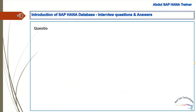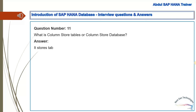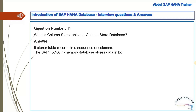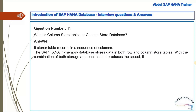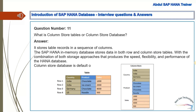Question 11: What are column store tables or a column store database? Answer: Column store tables store records in a sequence of columns. The SAP HANA in-memory database stores data in both row and column store tables. The combination of both storage approaches produces the speed, flexibility, and performance of the HANA database. Column store is the default option in HANA.